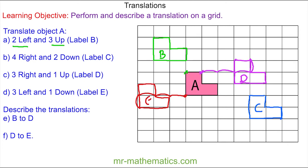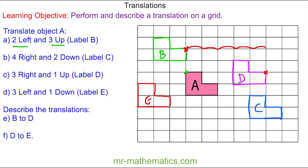Now we're going to move on to describing the translation. For question E, we've been asked to describe the translation from B to D. We'll pick any vertex on B and match the same vertex on D. We describe it by moving horizontally to the right by five places, and then a vertical movement of two down — so five to the right and two down.